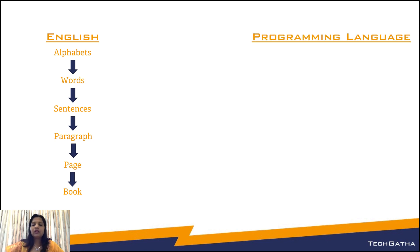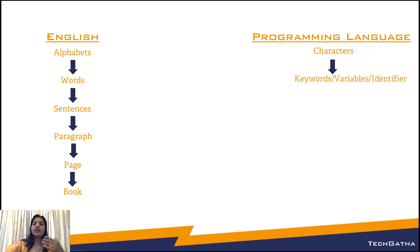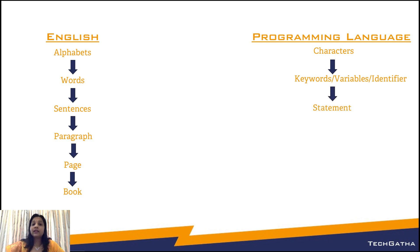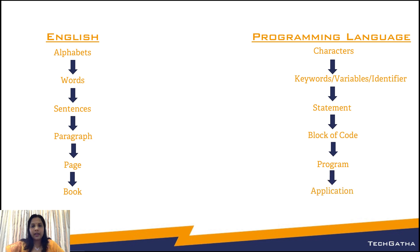Here as well, the way we have alphabets, we have characters. The way we have words, we have keywords, variables, or identifiers. Don't worry about these jargons — everything will be clear soon in the upcoming videos. Then combining these, we get statements. Combining statements, we get a block of code. We get a program, and then finally combining all the programs, you are able to create a software application.